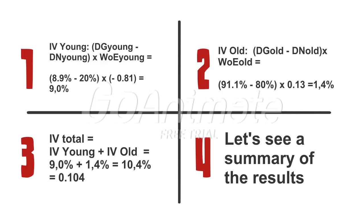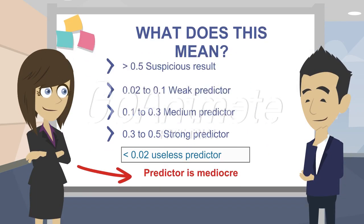Now we are ready to interpret our results. The information value can have numbers between 0 and 1. Everything below 0.02 is useless. Whereas something very high, such as 0.5 or more, is a very suspicious result because this is actually too good to be true. In between, we have weak, medium, to strong predictors. We want something between 0.3 and 0.5. In our case, we have a little bit more than 0.1, so it is a weak to medium predictor. We would keep it as long as we don't have a lot of other variables that are better.